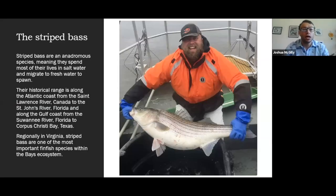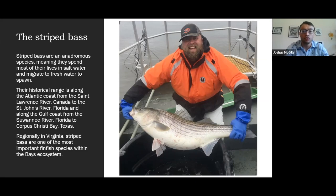To start off today, I'm going to go over a little bit of biology about striped bass. Striped bass are an anadromous species, meaning they spend most of their lives in salt water and migrate to fresh water to spawn. Their historical range is along the Atlantic coast from the St. Lawrence River in Canada, down to the St. John's River in Florida, and then in the Gulf of Mexico from the Suwannee River in Florida to Corpus Christi Bay in Texas. They have also been successfully introduced to the West Coast in the 1890s, and to plenty of reservoirs, lakes, and rivers found throughout North America.